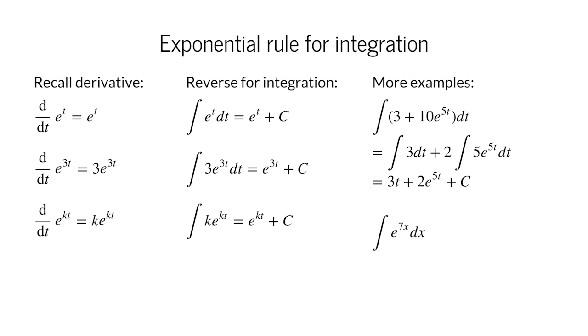What about the integral of e to the 7x, where we don't have a 7 in front like our rule demands? Well, just multiply by the 7 to put it where we need it, and multiply by 1 7th to undo it. Now we have 1 7th times our exponential plus a constant.